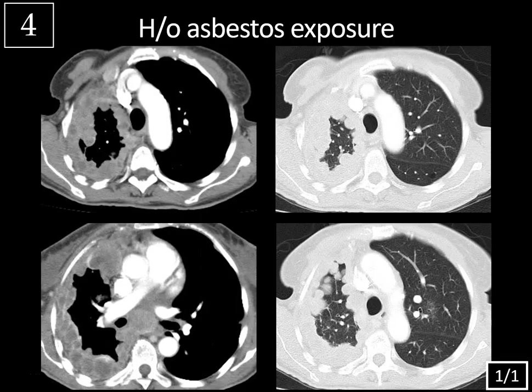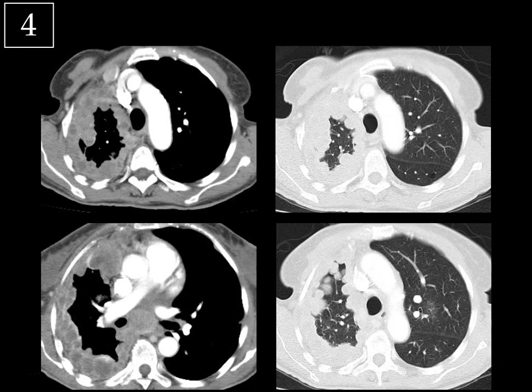Case four, history of asbestos exposure. On the left-hand side, we have soft tissue images of the mid to upper lungs, and on the right, we have lung windows.